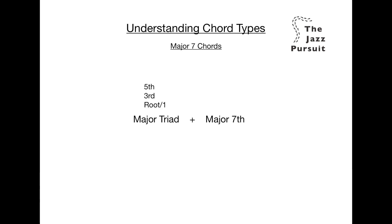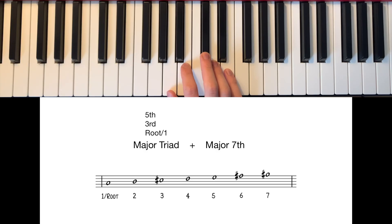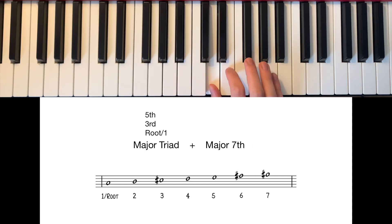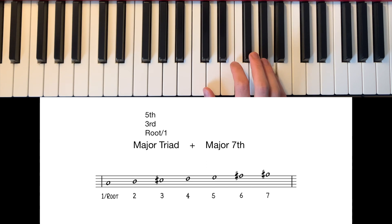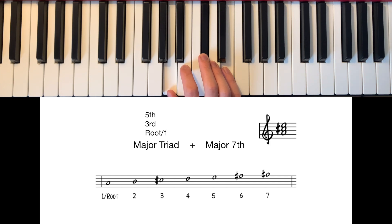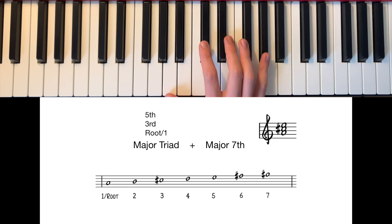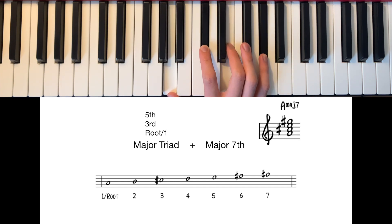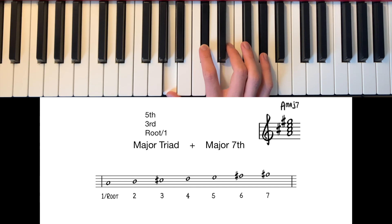Now let's try it out in a different key — how about A major? Here's our A major scale, which has an F sharp, C sharp and G sharp. First we need the triad, the root, 3rd and 5th, which is A, C sharp and E. Then we need our 7th, which is G sharp. Therefore, our A major 7 chord consists of A the root, C sharp the 3rd, E the 5th and G sharp the 7th. That's major 7s done with.